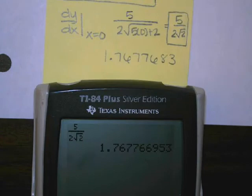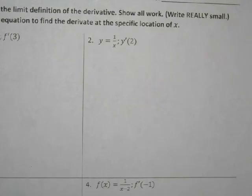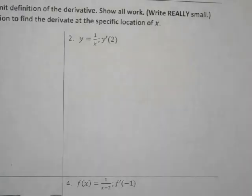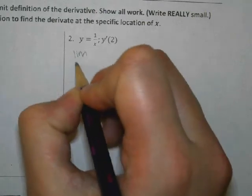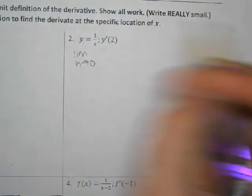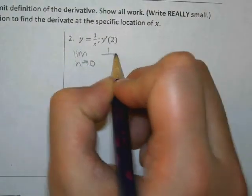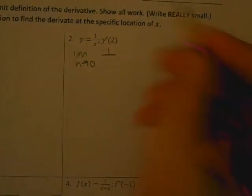We are also going to go over number two because complex fractions were a little bit of an issue for us, so I want to make sure we can do this one. So how should I start number two? The limit as h goes to zero of... 1 over (x+h).